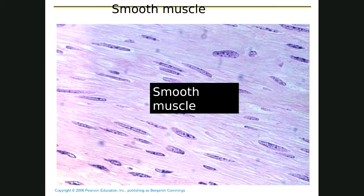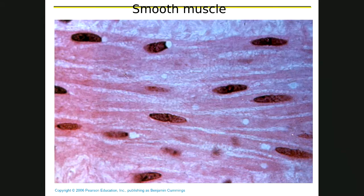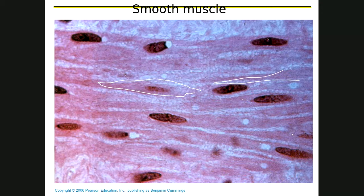Here's what it looks like blown up a little bit — you can see the tapered ends. Look at that one: tapered ends there and fat in the middle. There's a tapered end right there and fat in the middle. Same thing here and so on. This is smooth muscle, and look — there are no stripes, no striations.